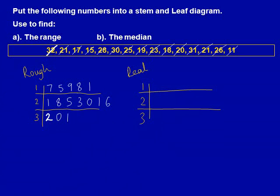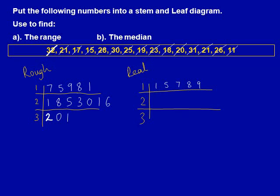We are now going to draw the real stem and leaf diagram. You start similarly to the rough one by drawing 1, 2, and 3 to stand for 10s, 20s, and 30s. Now we take the top row and rearrange the numbers so they go from smallest to biggest, 1 to 9. Here, we've done the same for the second row, and we have now done the same for the third row.